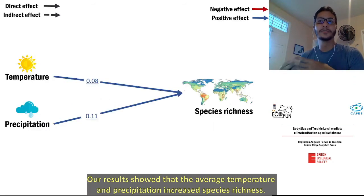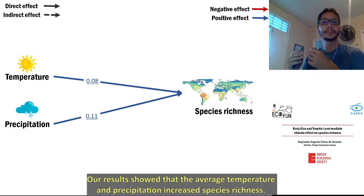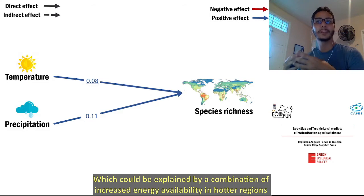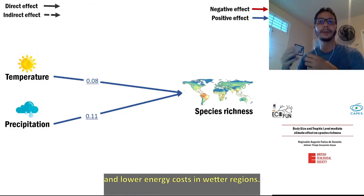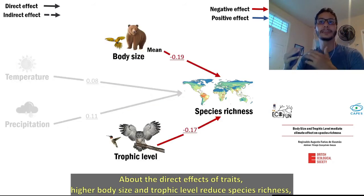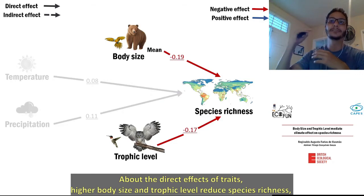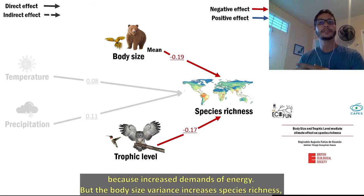Our results showed that average temperature and precipitation increase species richness, which could be explained by a combination of increasing energy available in hotter regions and lower energy costs in wet regions. About the direct effect of traits, high body size and high trophic level reduce species richness because of increased energy demand.